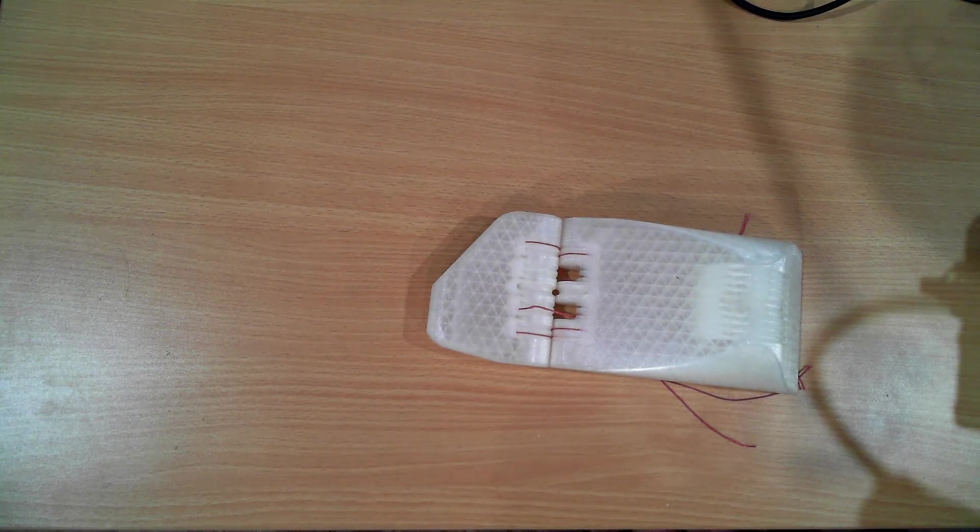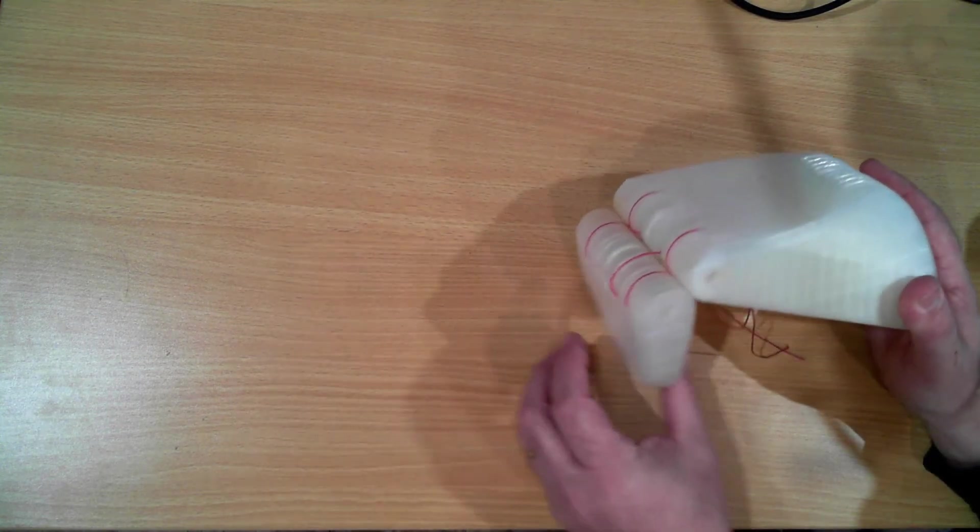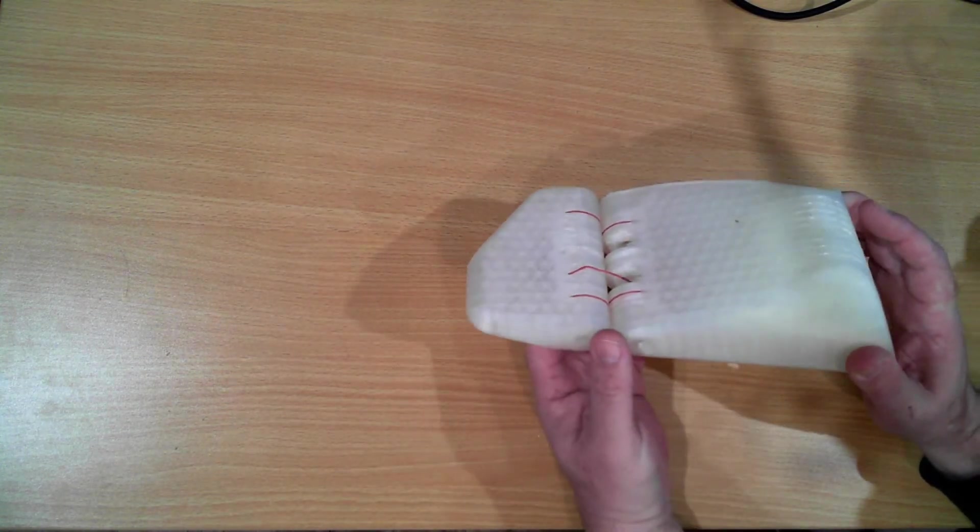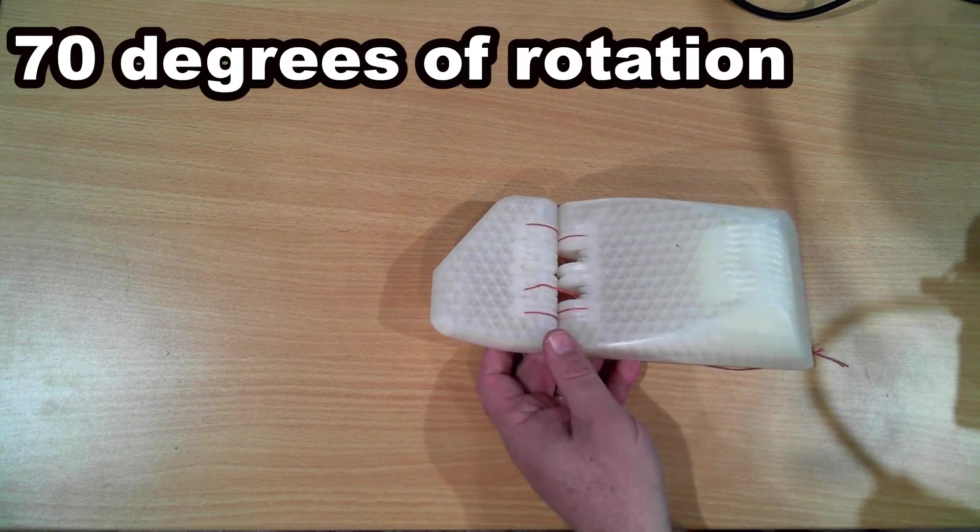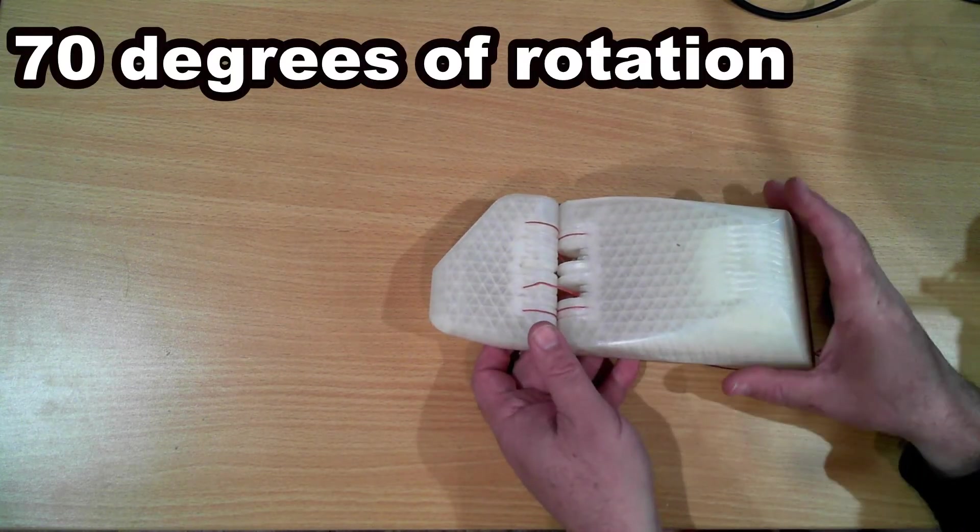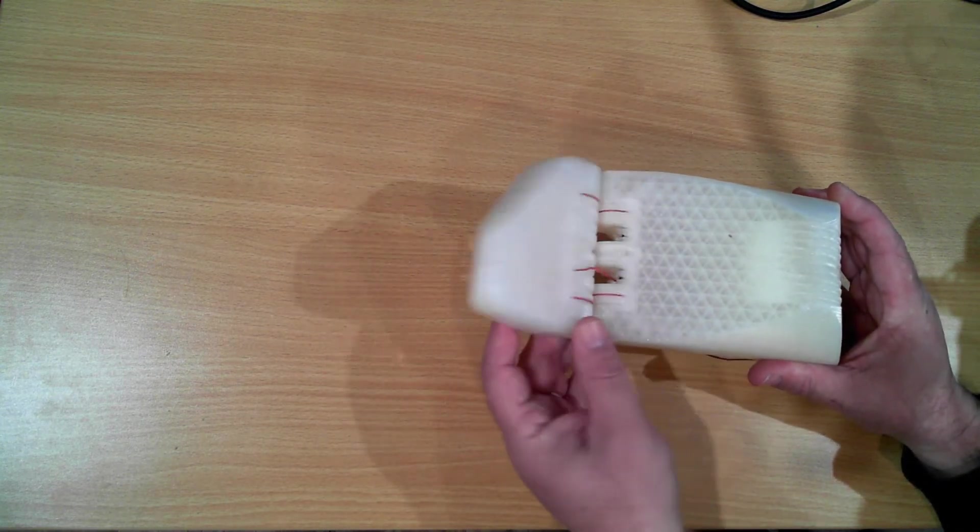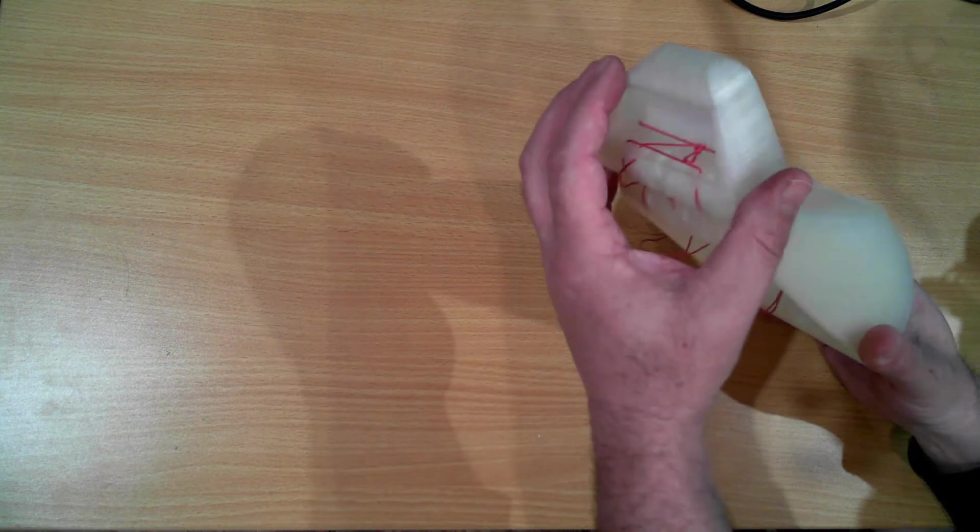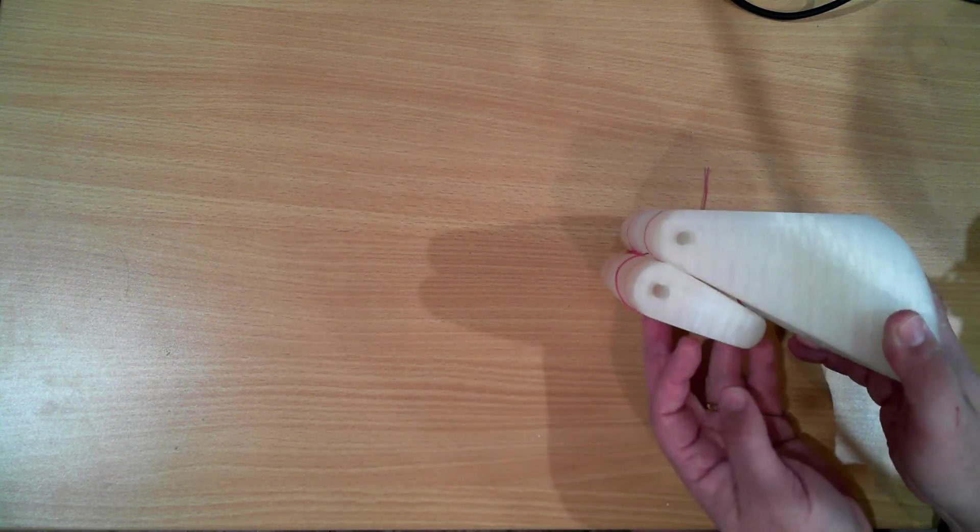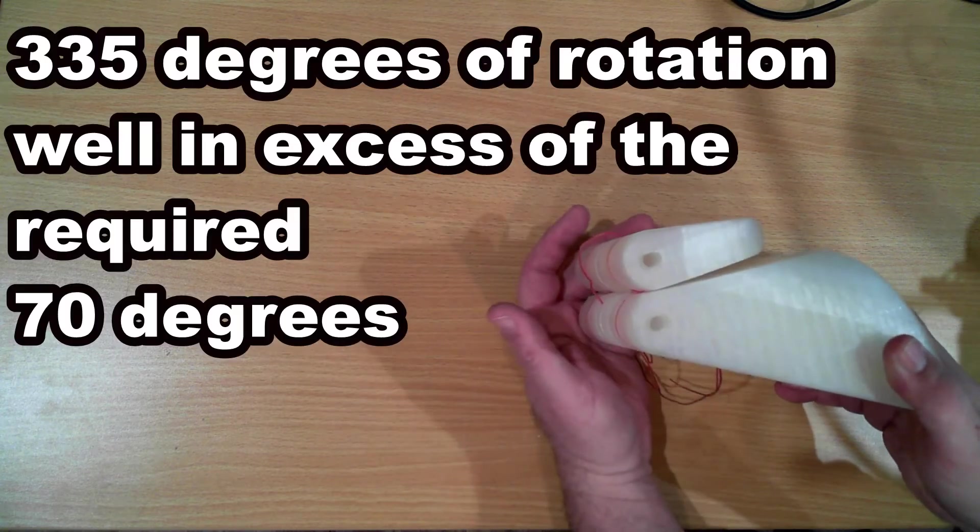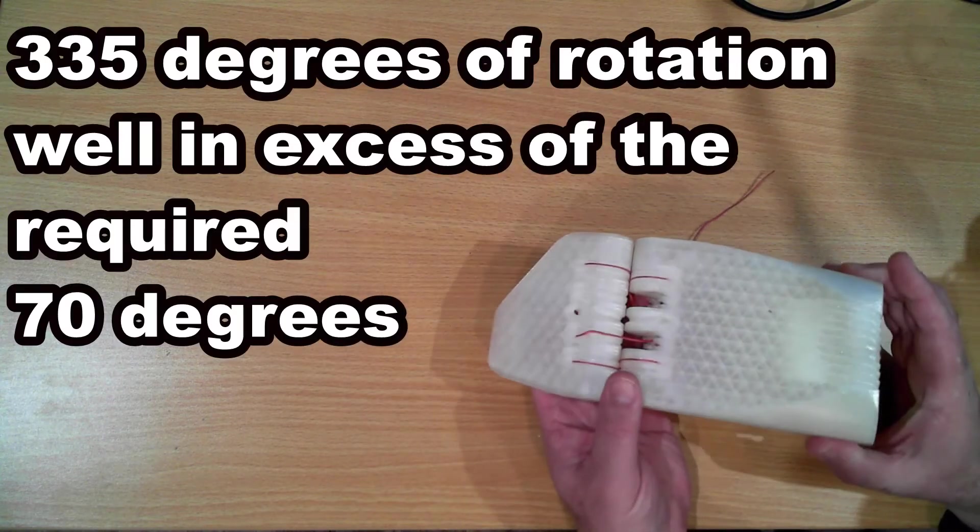But the general concept of this joint is actually very good. Now in the case of the foot, we needed about 70 degrees of freedom. We were looking at 10 degrees down and 60 degrees up. With this particular type of hinge rotational joint, we get closer to 135 degrees, which well exceeds the required 70.